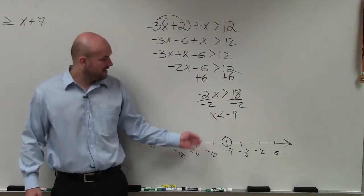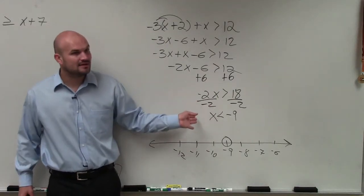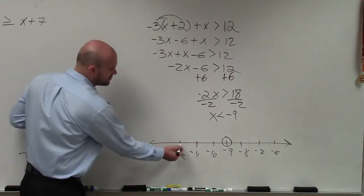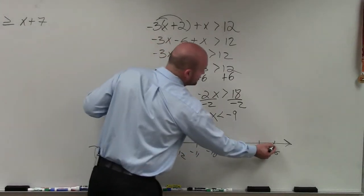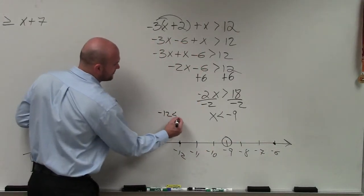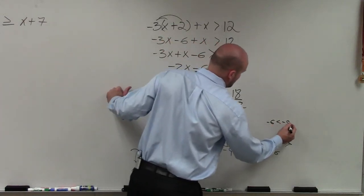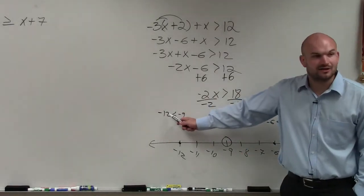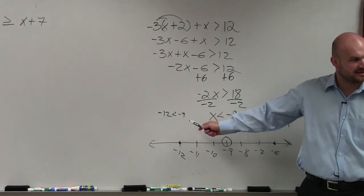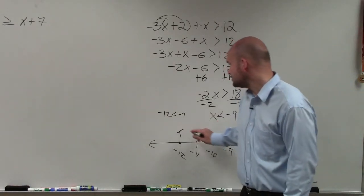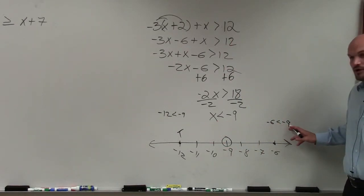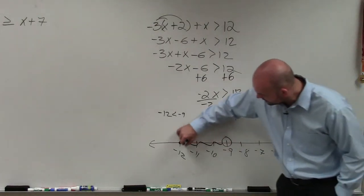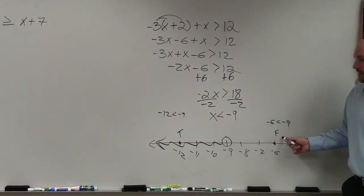And then you can either determine what numbers are less than negative 9. Are those going to be points to the left, or are they going to be points to the right? If you have trouble, you can always just pick a point to the left and to the right and plug that point in for x. And please remember, think of negative as like owing money. So if you owe $12, do you have less money than if you owe $9? Yes. So that is true. If you owe $6, is that like having less money than owing $9? No. So that's false. So therefore, we always shade towards where it's true and away from where it's false.